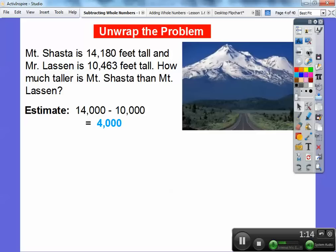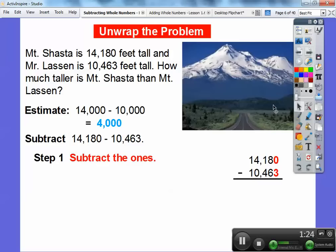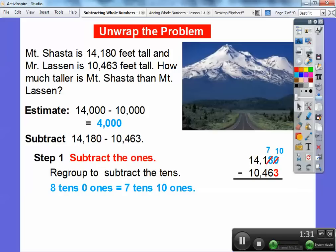We're going to get an answer that's around 4,000. Let's subtract 14,180 minus 10,463. We're going to subtract the ones. I cannot do 0 minus 3, so I have to regroup. This 8 tens and 0 ones, I'm going to take off one of the tens and make it 7 tens, and I'm going to add that ten to the zero so the zero becomes 10 ones.